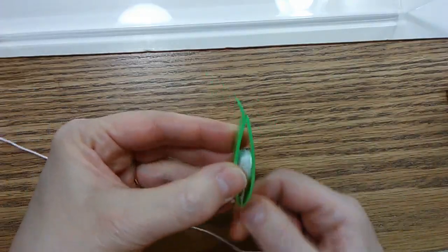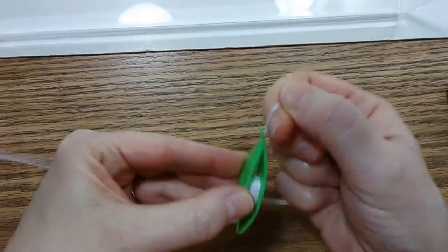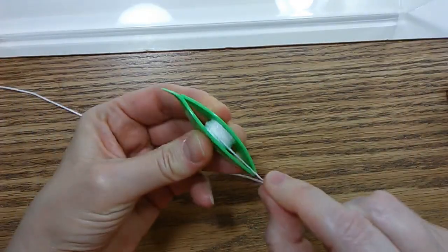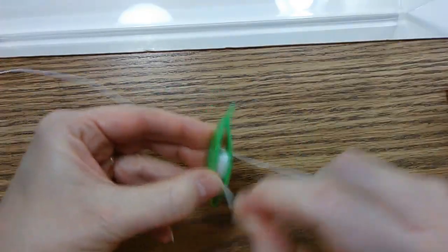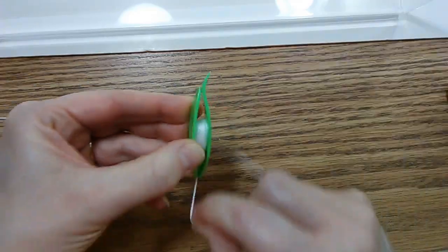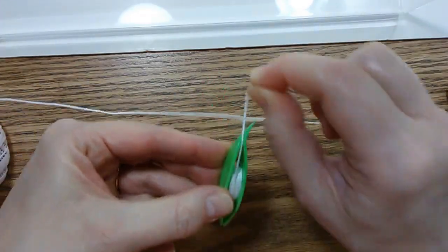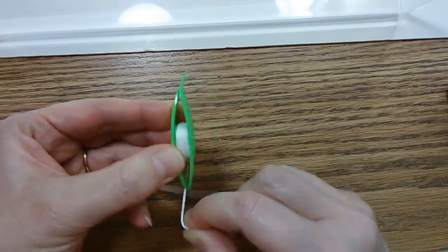Turning it back so that you're winding a balanced shuttle. And depending on the thickness of your thread or yarn, if you're using yarn, you just continue until you have the desired amount on your shuttle.